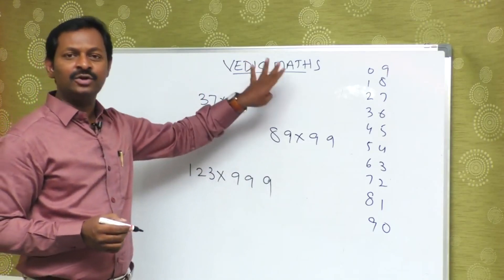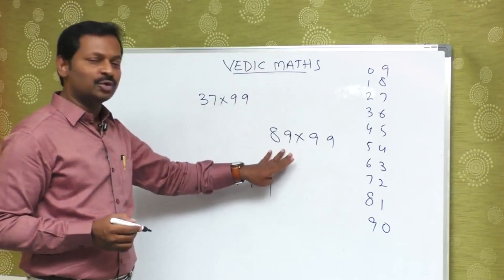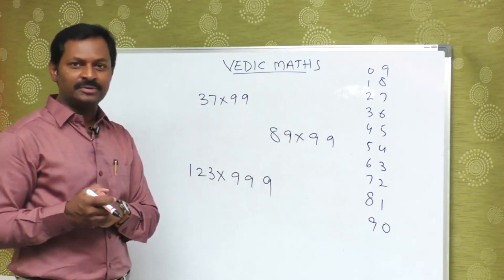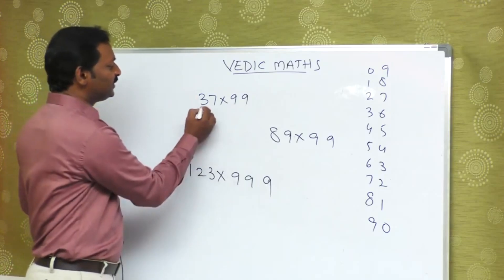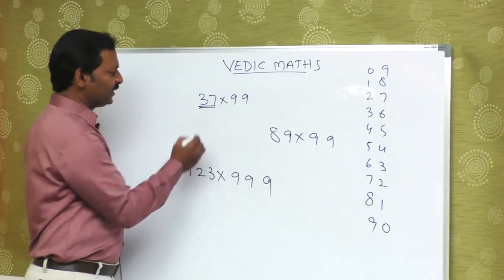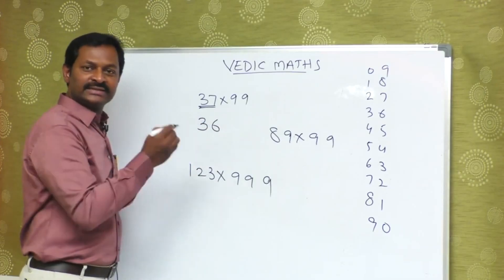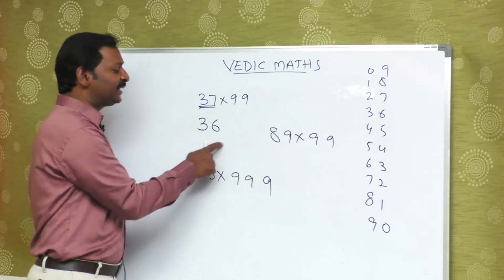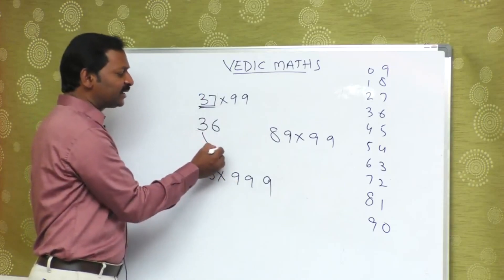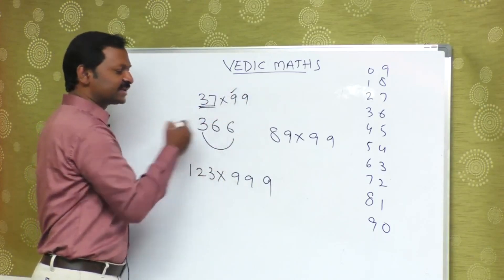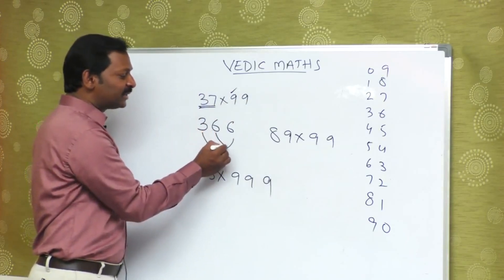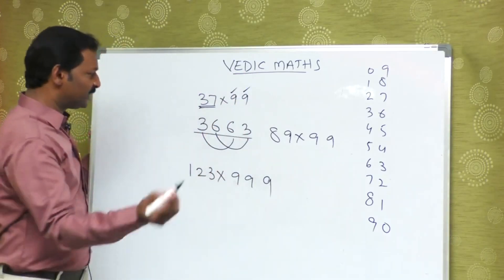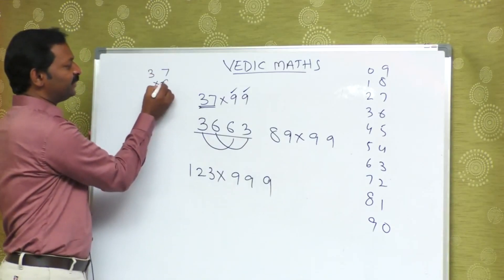100% — 2 digits, 2 nines. 3 digits, 3 nines. So we have to understand this concept. The number 37: the number is 36. 37 multiplied by 99, so number 36 is the first part.